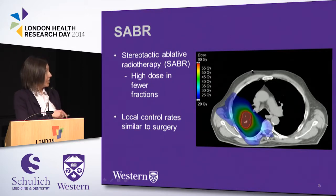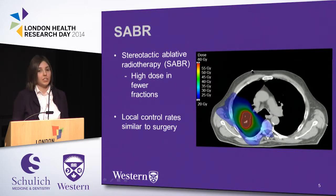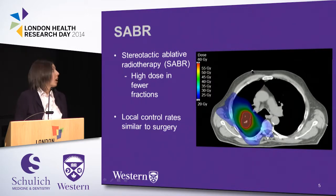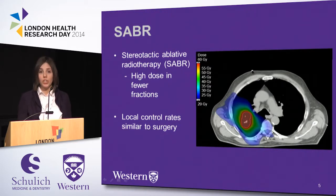As you can see in this dose distribution, in which each color represents a different dose to the tissue, the red high-dose region is wrapped tightly around the target, receiving about 60 gray, whereas the surrounding normal tissue receives less than 20 gray. SABR also uses higher doses in fewer fractions — in conventional techniques patients receive 60 gray in 30 fractions, but in SABR they receive the same dose in only 3, 5, or 8 fractions.